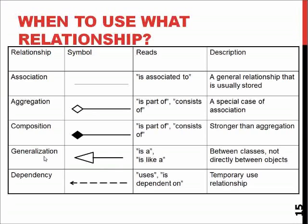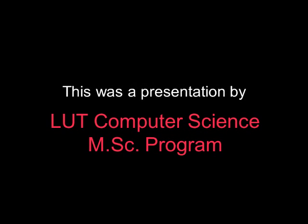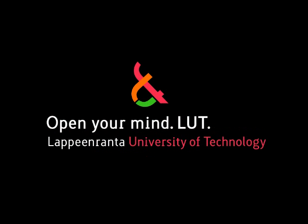Generalization is the inheritance concept from object-oriented programming. Dependency is a temporary-use relationship — the objects can exist without each other, but to achieve functionality they must exist at the same time and have a connection to each other. Thank you.